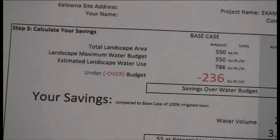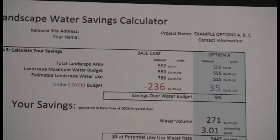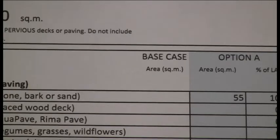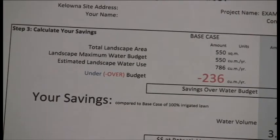The water budget is the amount of irrigation water needed to replace what evaporates or transpires through plant leaves. The budget varies with landscape area and is based on local climate — so there would be a different budget in Kelowna than on the coast. Applying more water than this budget is wasteful. The base case of 100% irrigated lawn exceeds the landscape water budget by 236 cubic meters a year.